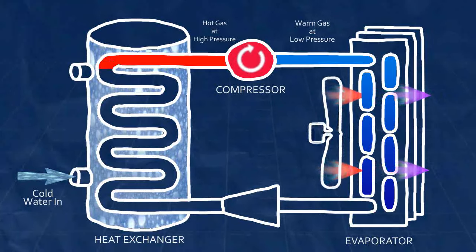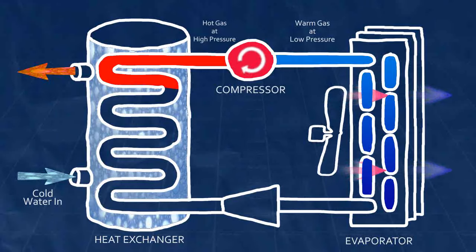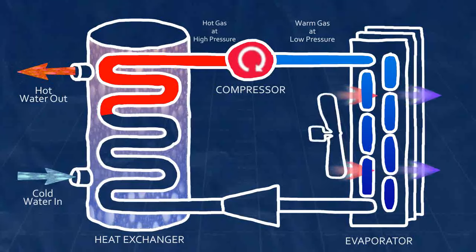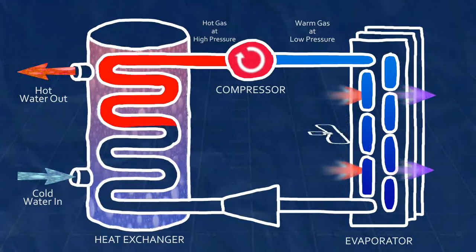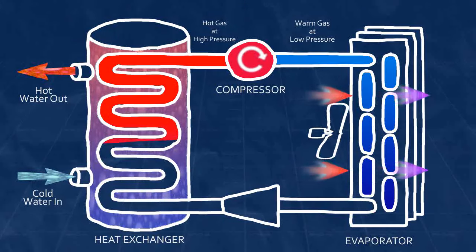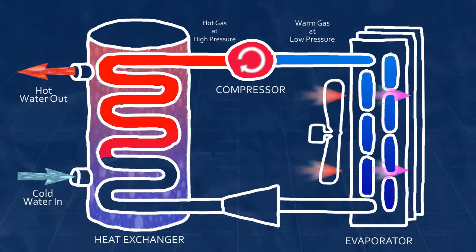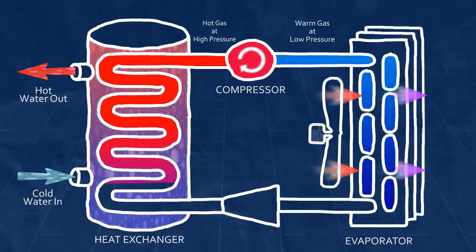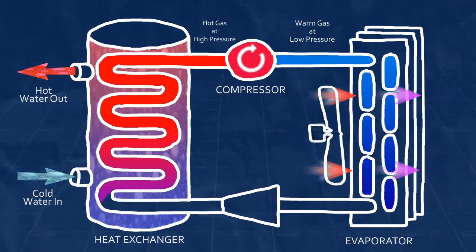The condenser is in contact with the water and the hot gas now gives up its heat to the colder water. As heat leaves the gas refrigerant, it cools off below its condensation point and changes from a gaseous state to a high pressure liquid state. The change from gas to liquid facilitates the large transfer of heat energy to the water.